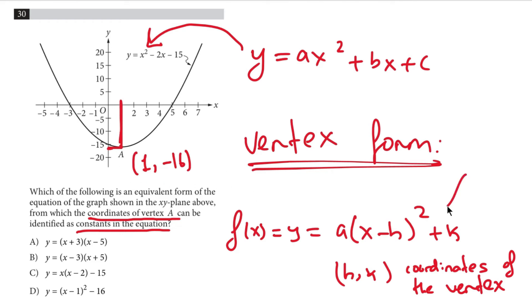So let's plug it into this equation right here. y is equal to a times x minus 1 all squared minus 16. Now a can be determined from here because we can compare the general form to what we have and we'll see that a is just 1, so we can just neglect this.